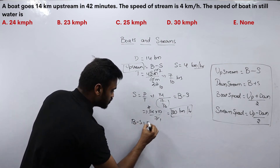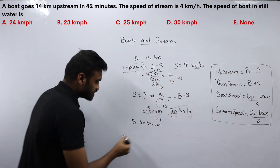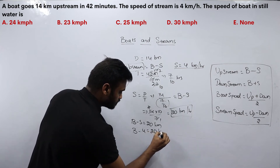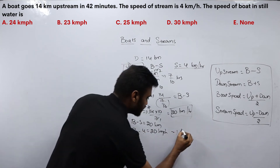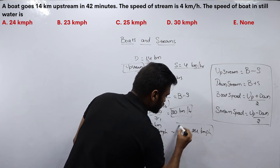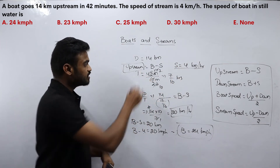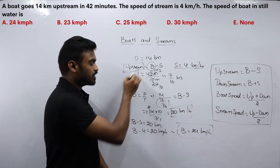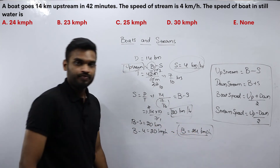Upstream equals B minus S = 20 km/h. Stream speed S = 4 km/h is given, so B = 20 + 4 = 24 km/h. First find the upstream value using speed = distance/time, then substitute the stream speed to find the actual speed of the boat.